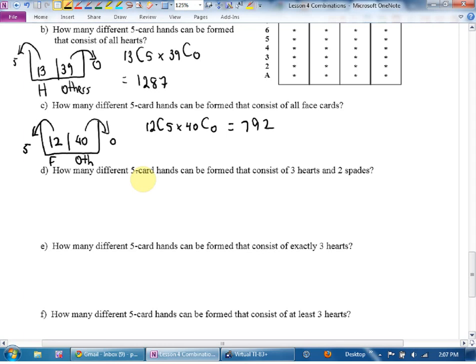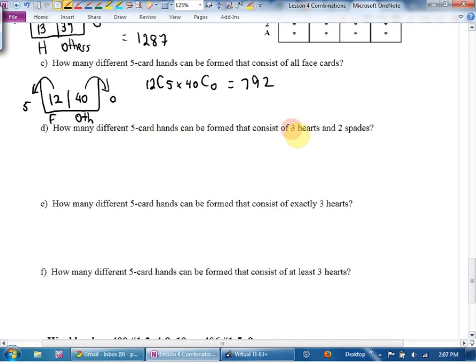How many different five-card hands can be formed? Three hearts, two spades. Okay. This bucket is going to have three sections. Hearts, spades, and others, because some cards are neither hearts nor spades. How many spades are there in the deck? Thirteen. How many hearts are there in the deck? Thirteen. How many others are there in the deck? Twenty-six. How many hearts do I want? Three. How many spades? Two. How many others? None. Can you see the equation? Thirteen choose three, and thirteen choose two, three hearts, and three spades, and no others.